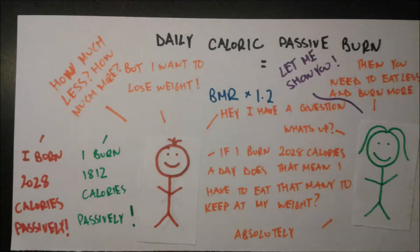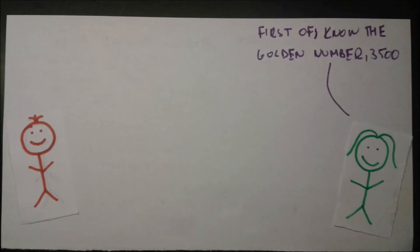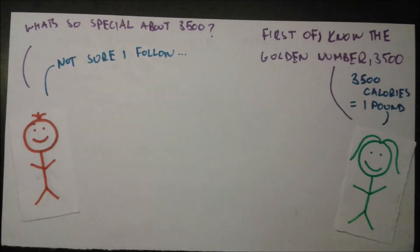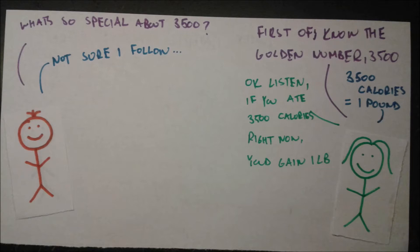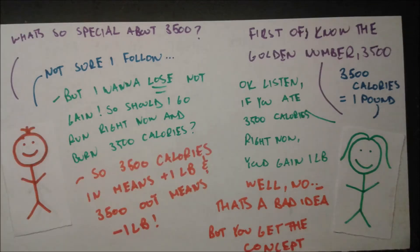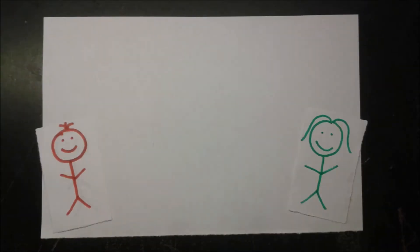The golden number is 3,500 — because 3,500 calories equals one pound. That means eating an extra 3,500 calories gains you a pound, and burning an extra 3,500 loses you a pound. Both extremes at once are bad ideas, but the point is 3,500 calories in your body means plus one pound, and 3,500 out means losing a pound.